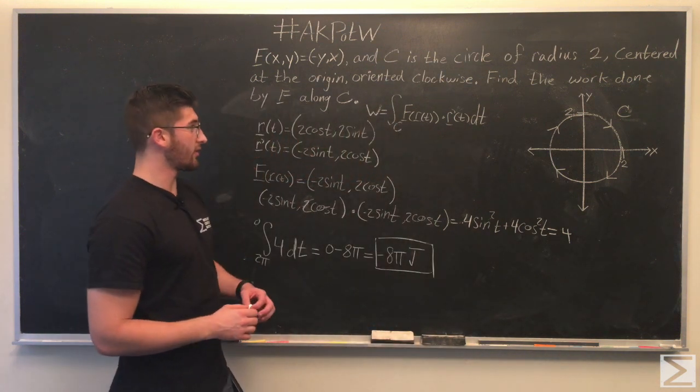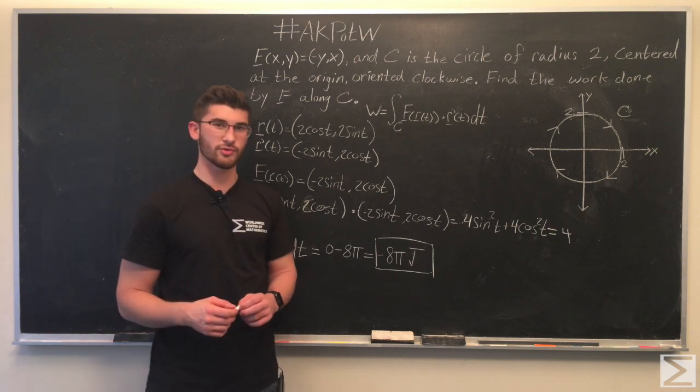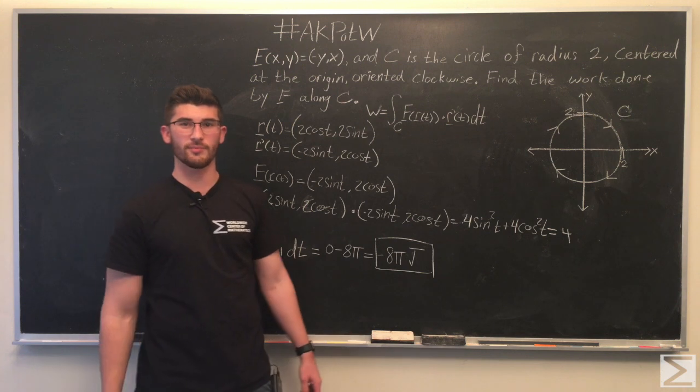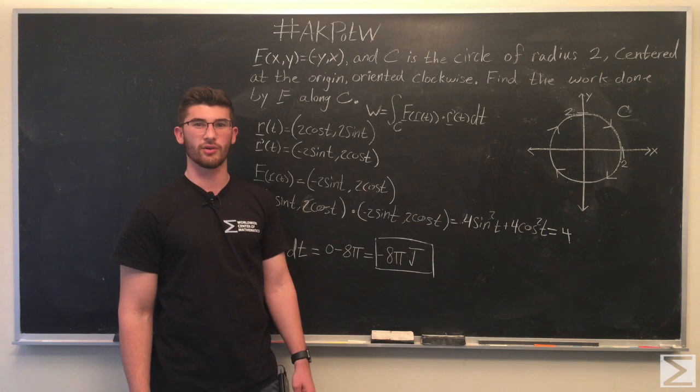So, when we plug that in, we get that the work done by f along the curve C is going to be negative 8π joules. So, that concludes this week's Advanced Knowledge Problem. Make sure you check us out on Twitter and Facebook, and take a look at our blog at centerofmath.org. Thanks.